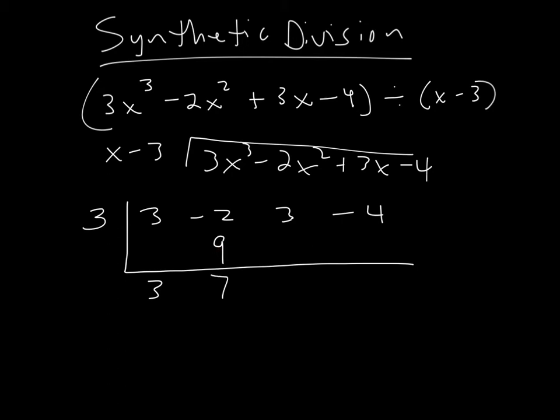And then we do it again. We multiply 3 times 7 and put that number here, so that's 21. Then we add, we get 24. Then we multiply again. 3 times 24, we put that number here, that's 72. And then we add. And negative 4 plus 72 is 68.